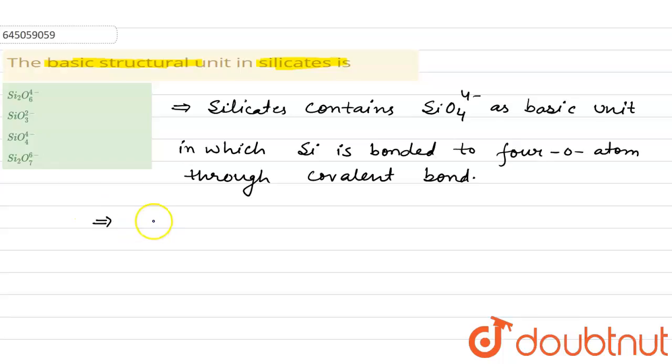In the basic unit, the silicon atom is present in sp3 hybridization.